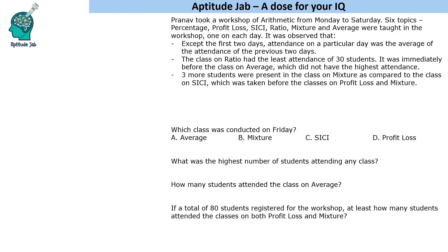Hello everyone, welcome to Aptitude Jab. This is a number puzzle. It says that Pranav took a workshop of arithmetic from Monday to Saturday, and there are six different topics taught in the workshop, one on each day. Certain things are given to us: except the first two days, attendance on a particular day was the average of the attendance of the previous two days. We will have to find the number of people attending the class on each of these days.